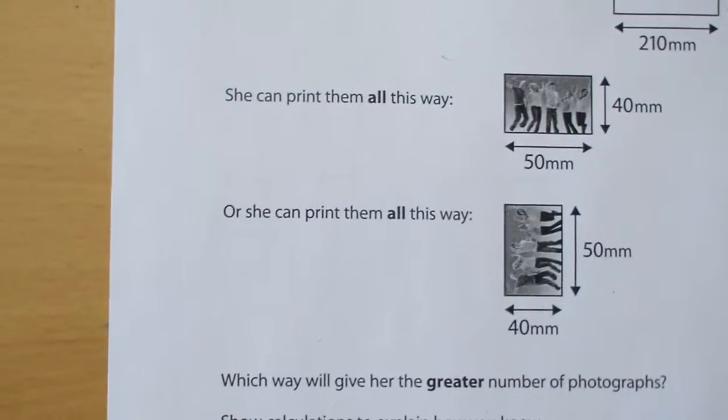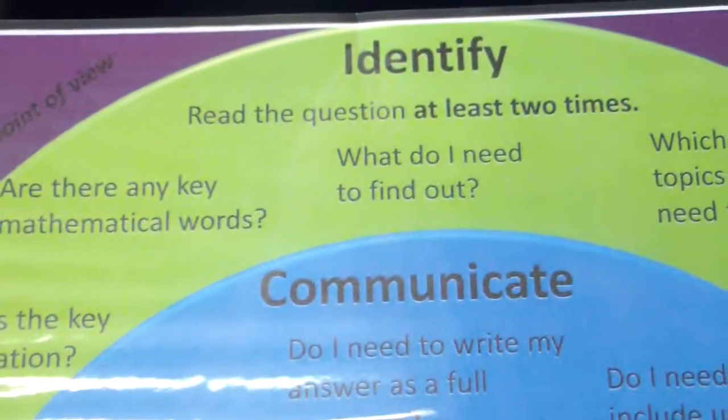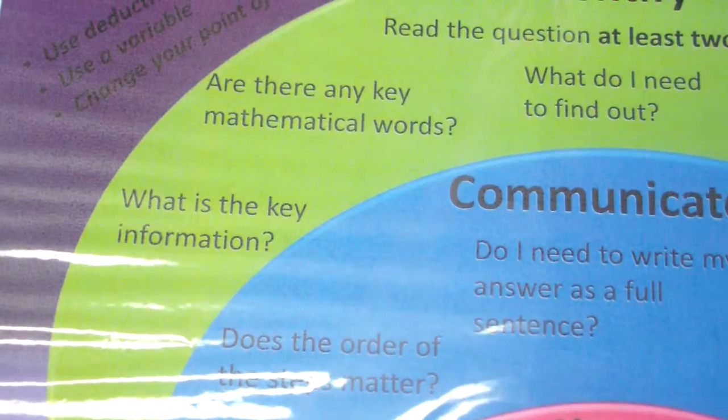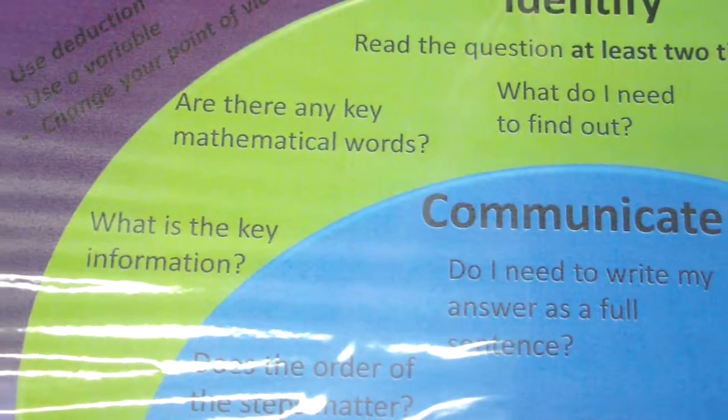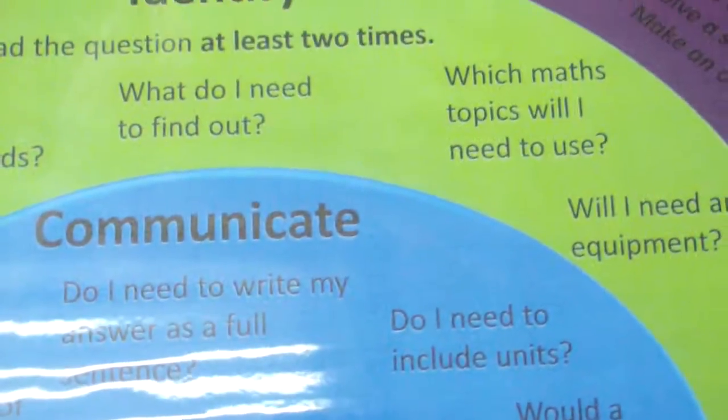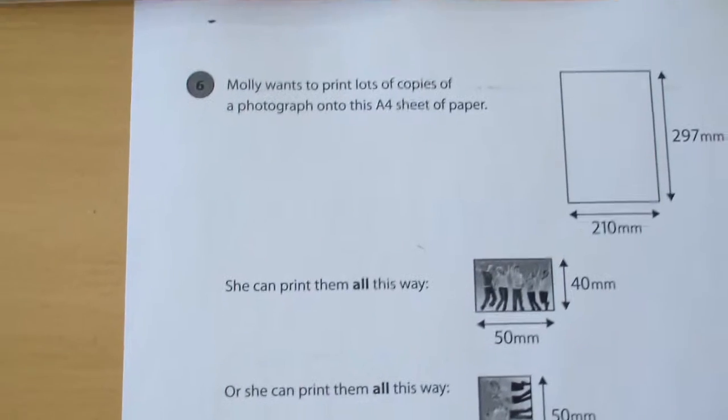You can't mix and match. You can only put them landscape or portrait. So first thing people need to do is identify what they need to use, what they need to find out, what's the key information, and are there any mathematical words that they can use to figure out what topics they need to use to answer the question.